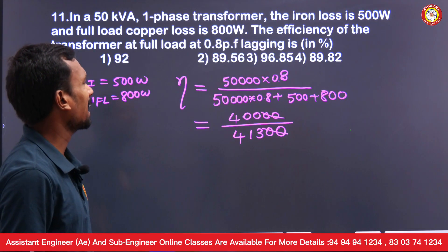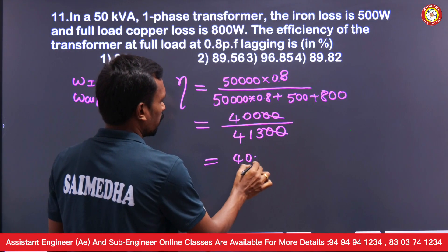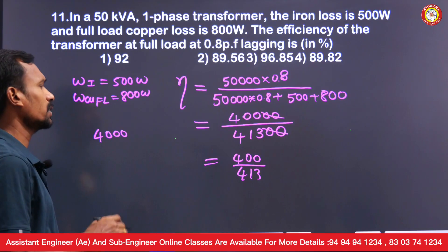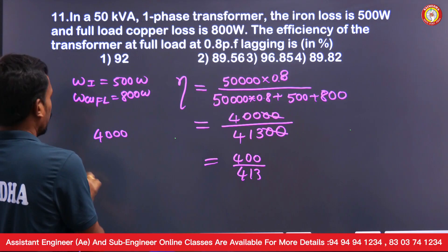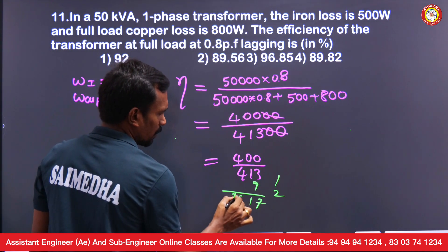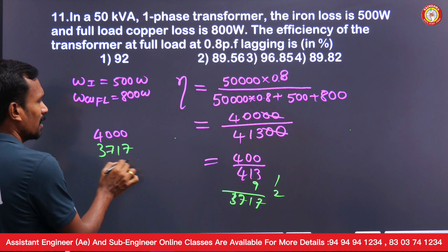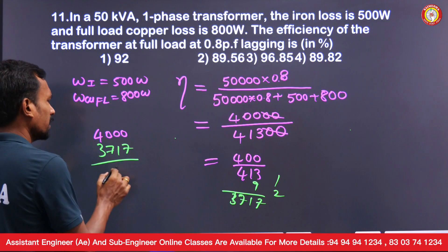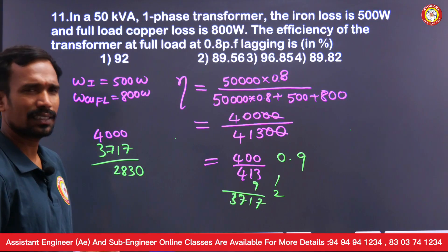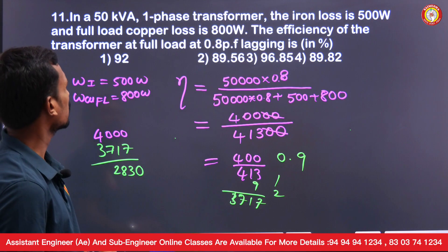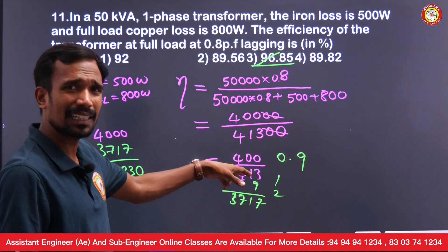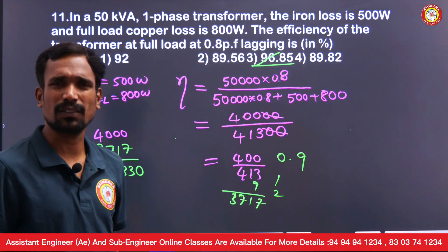Simplifying: 400/413. By calculation, this gives approximately 0.9685, so the efficiency is about 96.85%. For this type of question, calculating to two decimal places is sufficient.